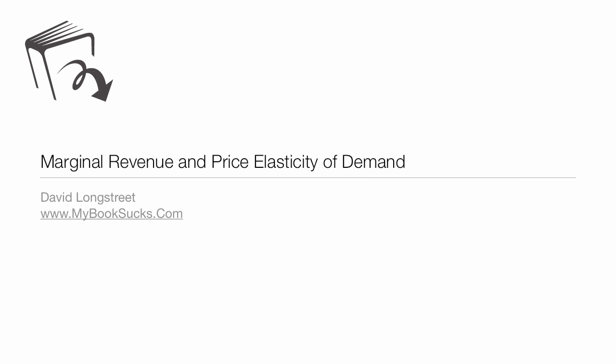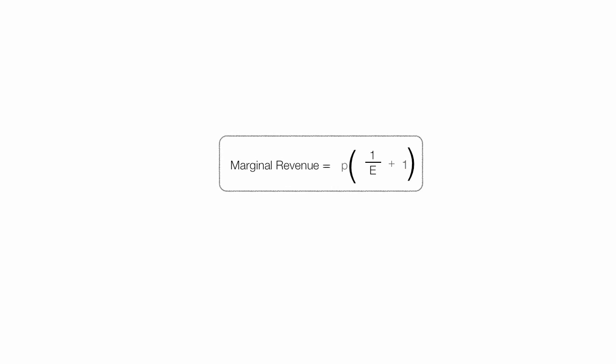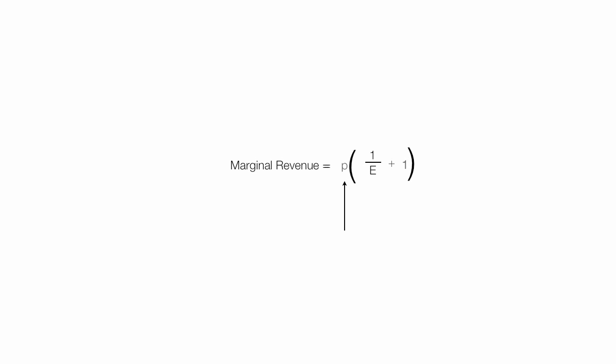In this tutorial, I'm going to use a little bit of math to discuss marginal revenue and price elasticity of demand. I'm going to prove this equation, where E is elasticity and P is price. Marginal revenue is equal to price times 1 over elasticity plus 1.